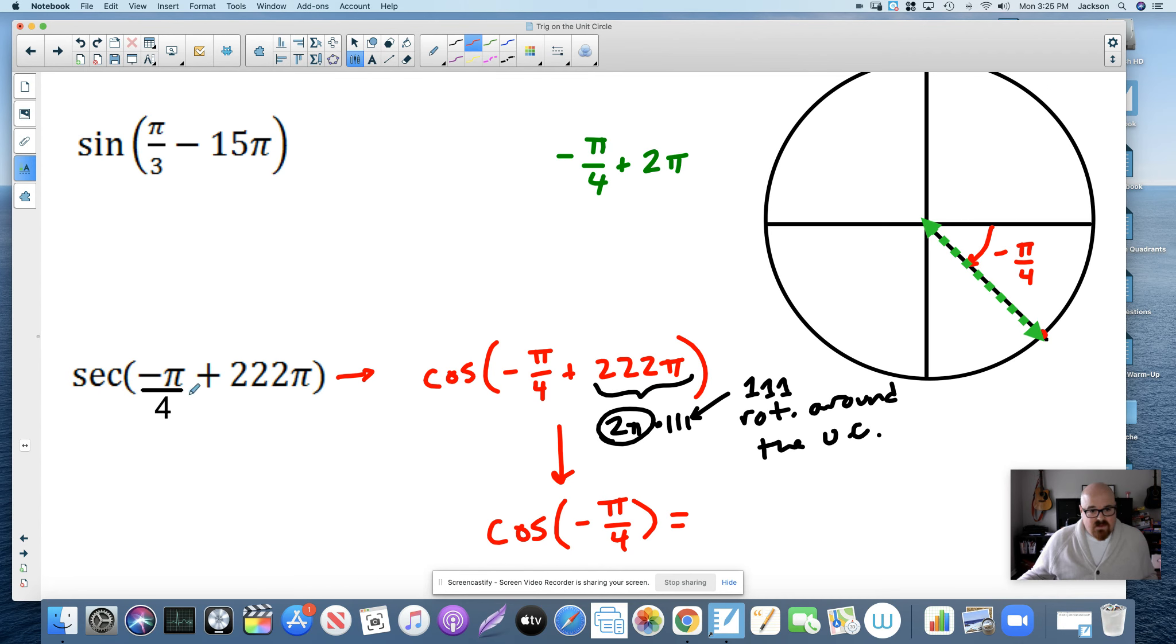Now, to answer this question, what is the cosine of negative pi over 4? What are the coordinates here? Radical 2 over 2 and negative radical 2 over 2. So the cosine is radical 2 over 2. What's the secant? We flip that over, and we have 2 over radical 2, and then we rationalize.